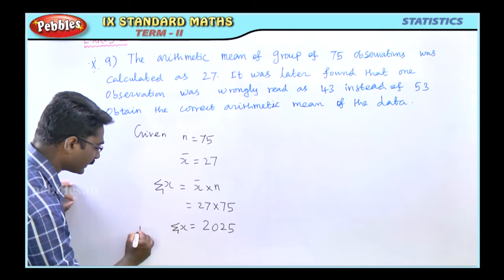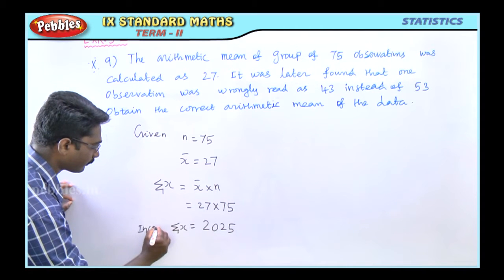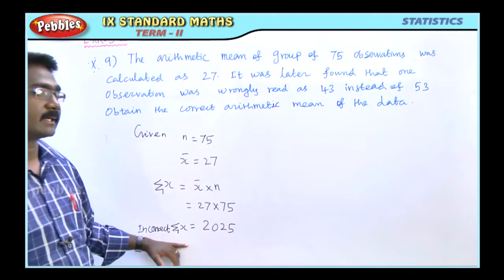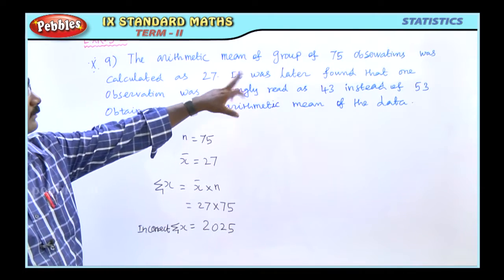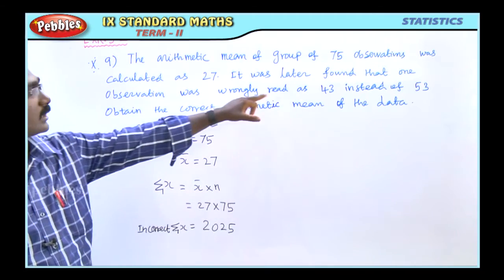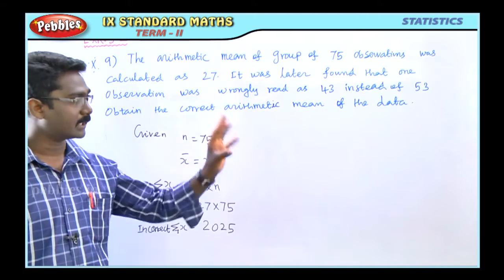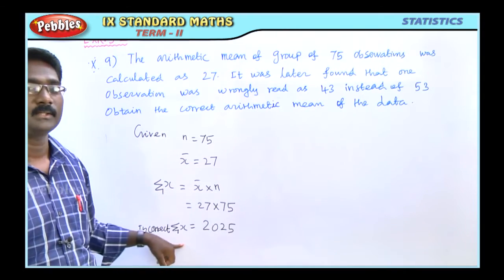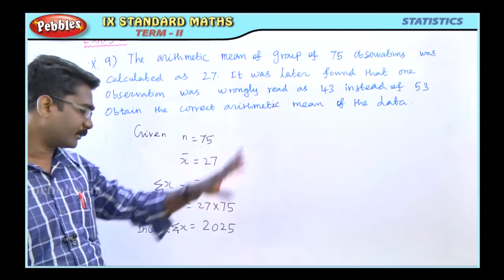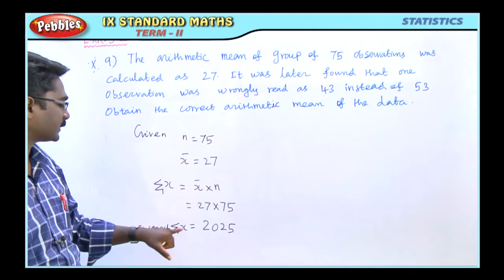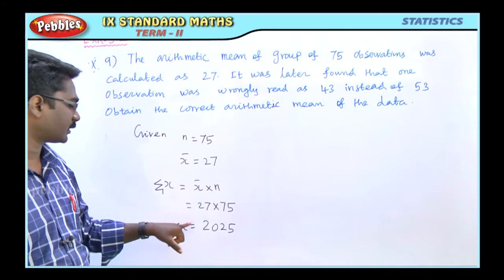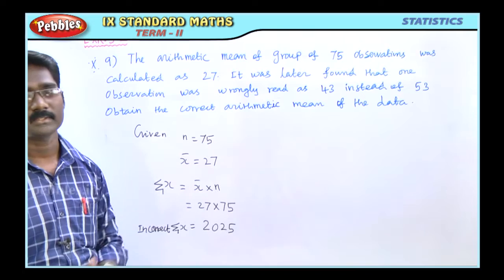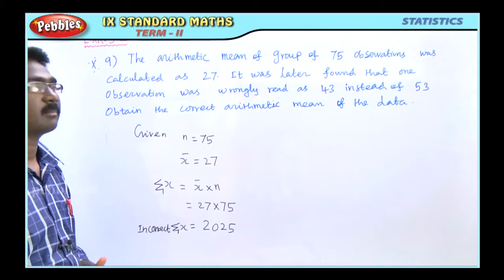Actually, this 2025 is incorrect — it is the incorrect sigma x. Why is it incorrect? Because it was later found that one observation was wrongly read as 43 instead of 53. When 43 was added instead of 53, the summation became incorrect. So 2025 is the wrong sigma x.